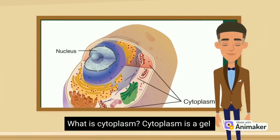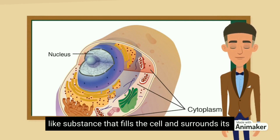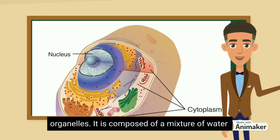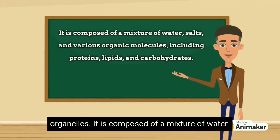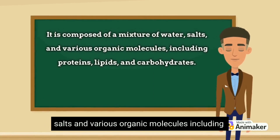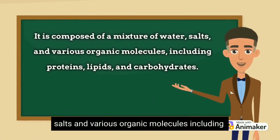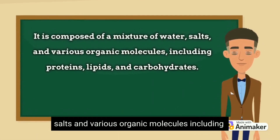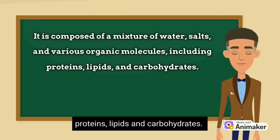Cytoplasm is a gel-like substance that fills the cell and surrounds its organelles. It is composed of a mixture of water, salts, and various organic molecules, including proteins, lipids, and carbohydrates.